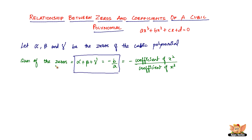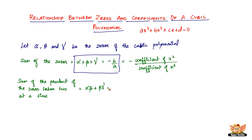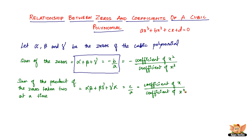The next one would be the sum of the products of the zeros taken two at a time. This is nothing but alpha beta plus beta gamma plus gamma alpha, which equals c by a — that is, the coefficient of x divided by the coefficient of x cubed. That is the key relationship to remember here.